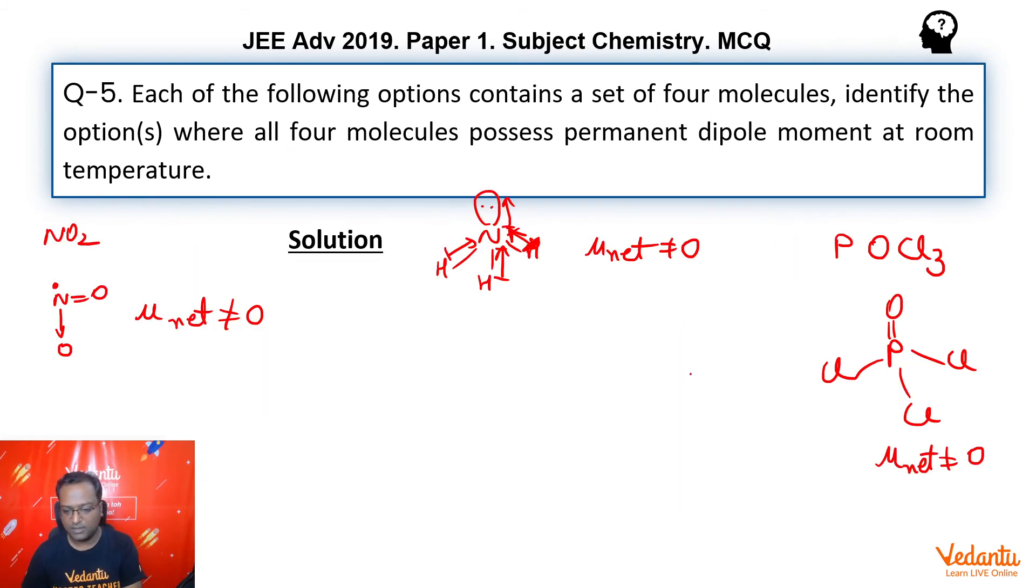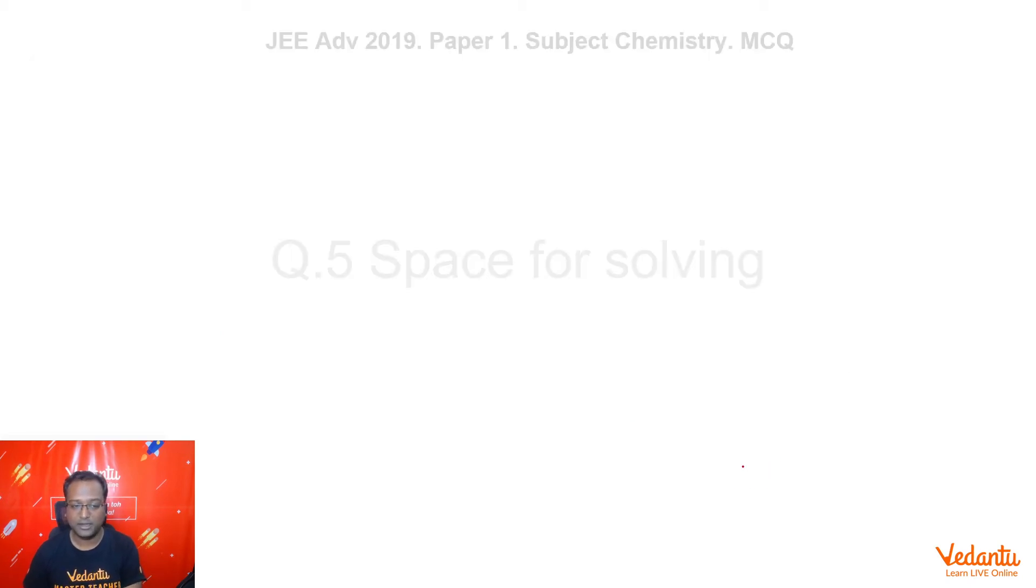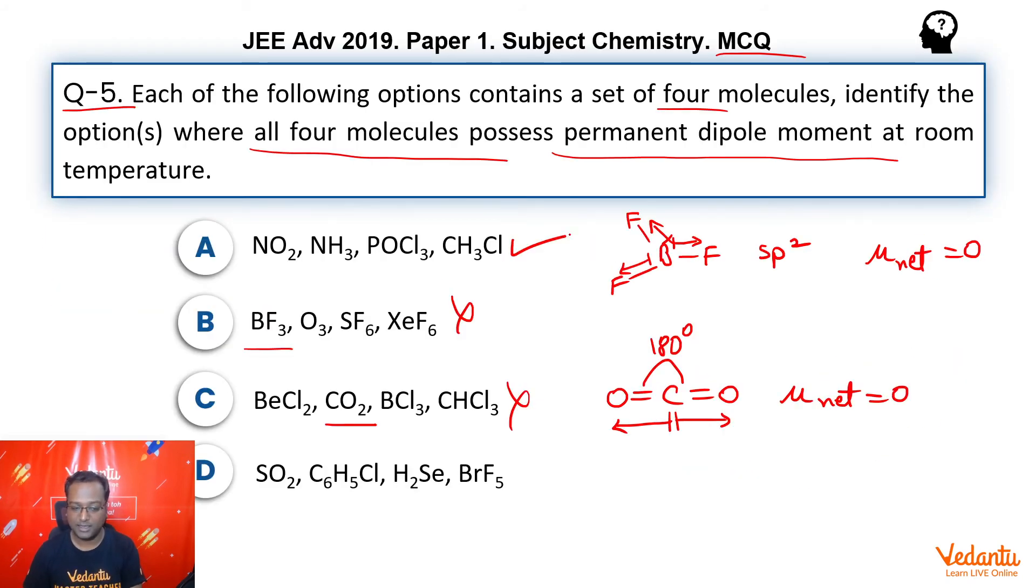Then, we have CH3Cl. Carbon has 3 hydrogens and 1 chlorine. And here also, as you can see, there is nothing that will get cancelled out totally. So, mu net not equal to zero. So, definitely, option A is the answer.